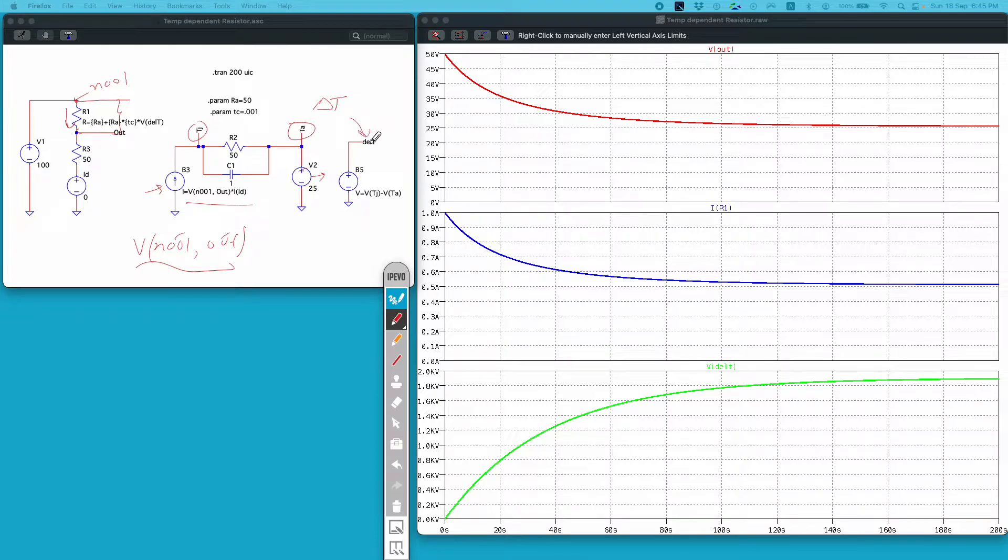This delta T I am using this behavior voltage source to take the difference of these 2 nodes. Using this equation and output of this behavior voltage source is my delta T and this delta T I am calling it into this function.